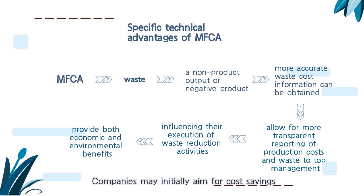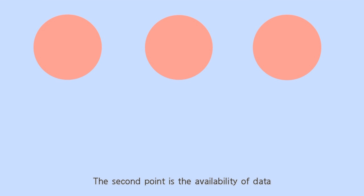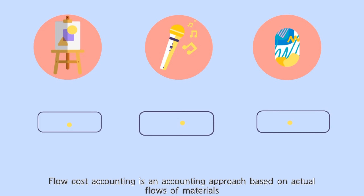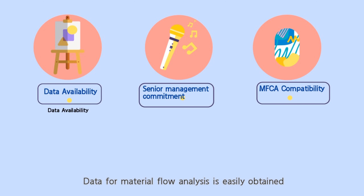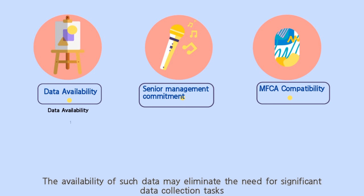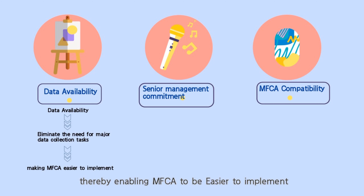Companies may initially aim for cost savings, but by adopting MFCA, they can promote environmental benefits and reduce costs. The second enabling factor is the availability of data. Flow cost accounting is an accounting approach based on actual flows of materials, and data for material flow analysis is easily obtained. The availability of such data may eliminate the need for significant data collection tasks, thereby enabling MFCA to be easier to implement.